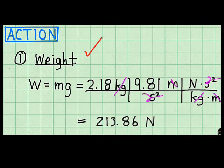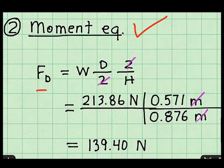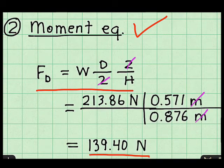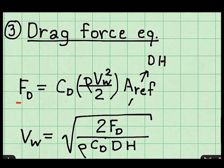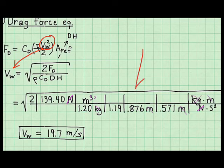I calculate weight at about 214 newtons. I rewrite the moment equilibrium equation to solve for the drag force. My calculation shows the drag force is about 140 newtons. To calculate the wind speed, I write the drag force equation here, then solve for the wind speed. I plug numbers into the equation and calculate a wind speed of 19.7 meters per second.